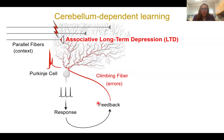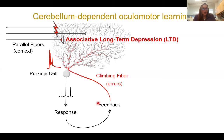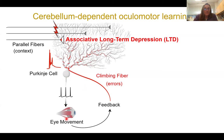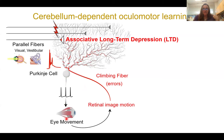That's the textbook model. In our lab we've been considering how well this model accounts for ocular motor learning — specifically smooth eye movements. The Purkinje cells in the flocculus drive eye movements, with the goal of stabilizing images on the retina. If there's image motion, that represents an ocular motor error encoded by climbing fibers, which can weaken visual or vestibular parallel fiber synapses that caused a bad eye movement.